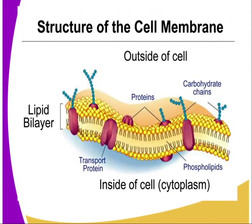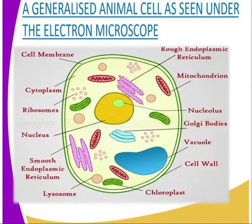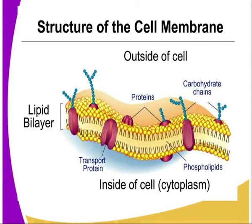Having said that, here is the diagrammatic representation of the structure of the cell membrane. The cell membrane is also known as a plasma membrane, or you can call it a plasmalemma. It is the outer covering that encloses the contents and regulates the movement of materials in and out of the cell.